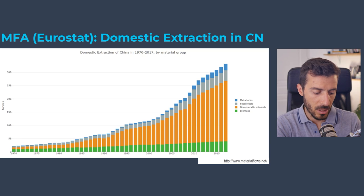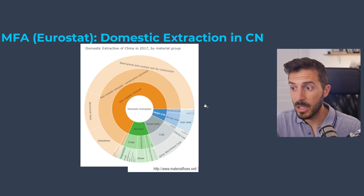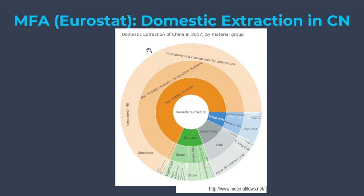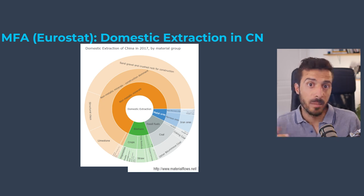This really shows how an economy that needs to build its infrastructure — like China — has dramatically impacted its domestic extraction. We're talking about 30–35 billion tons of domestic extraction. Zooming in, there's mostly sand and gravel, some structural clay and limestone, and within biomass almost half goes to feed humans and half to feed cattle. In fossil fuels, mostly coal is extracted locally, giving you an idea of a more resource-diverse economy.